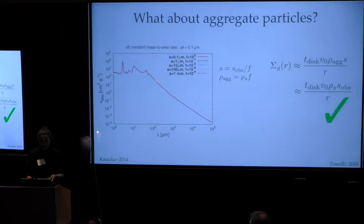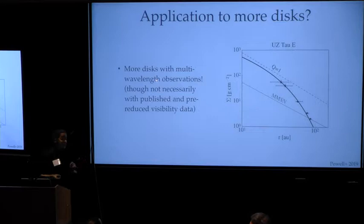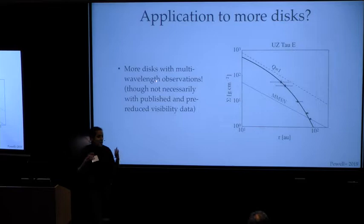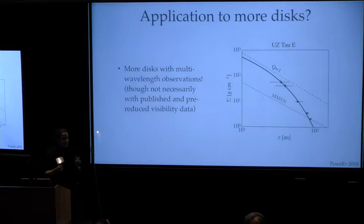So I should note that there are several more disks in the literature that have multi-wavelength emission that seems to show this trend. Here I'm showing the disk UZ Tau E with these radius points taken from Tripathi et al. 2017, and it appears to show similar behavior. However, many disks do not have published pre-reduced visibility data, so without being able to apply our specific method of finding the disk outer edge, it's not fully convincing, but this is something that could be applied to more disks that are already out there now.